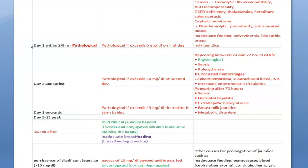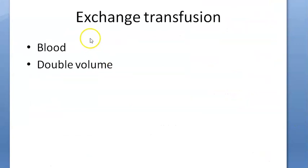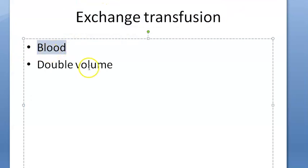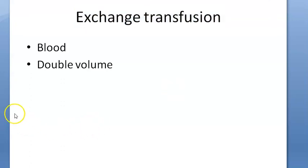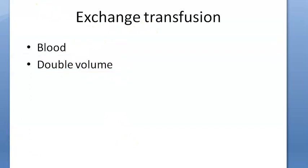Why jaundice happens is covered in a separate video. Another option for handling jaundice is exchange transfusion, done only if there are very severe bilirubin levels. They take the baby's blood away and inject the same blood group but Rh-negative blood. So if baby is A-positive, they give A-negative blood to the baby. This is covered in a separate video.